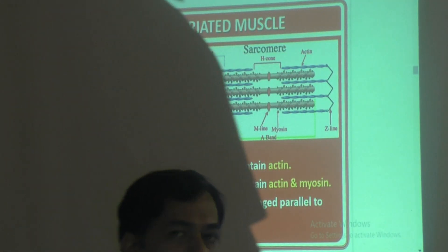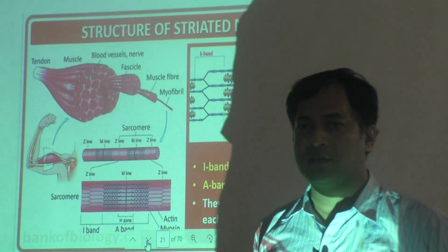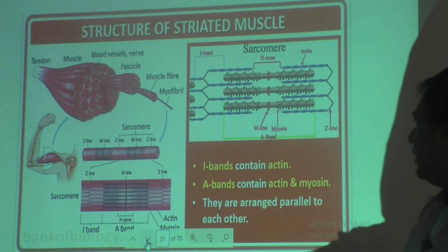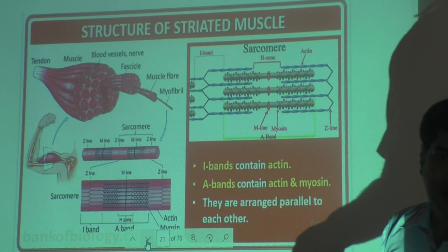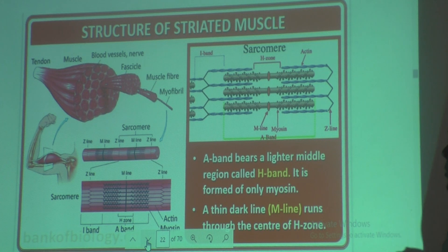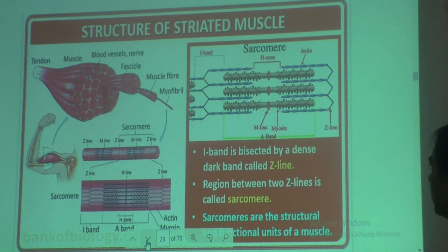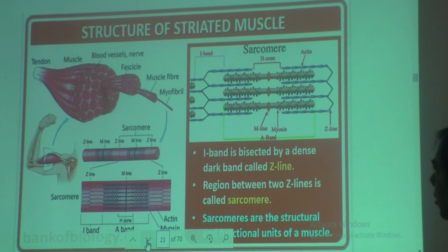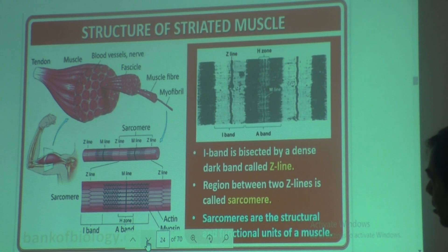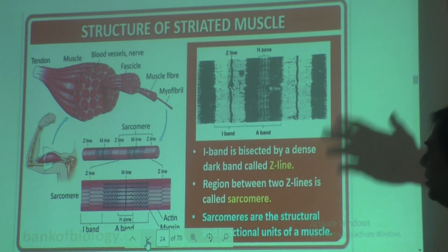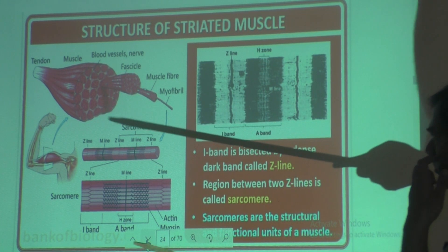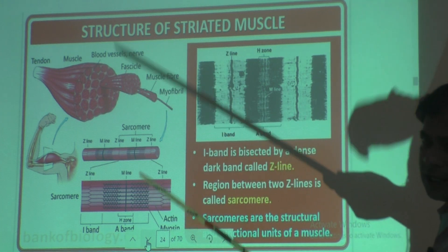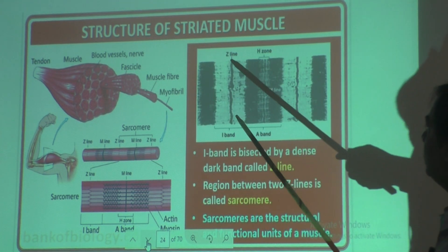Students, under chapter locomotion and movement, in our last class we have learned till actin and myosin. This picture we have learned in our last class. We have already discussed about it — what is Z line, what is M line. I have already explained in last class. Once again we will see what these are.